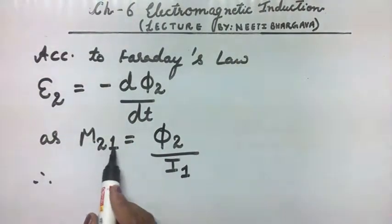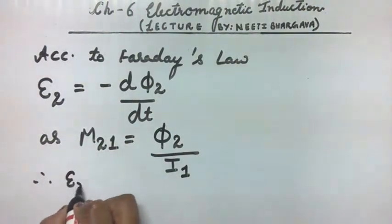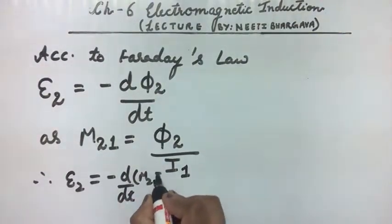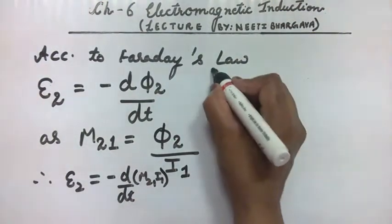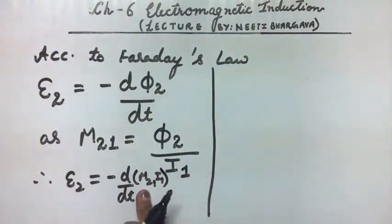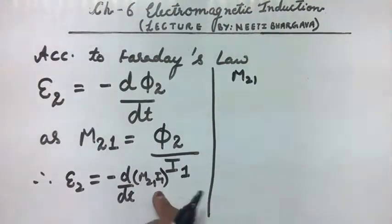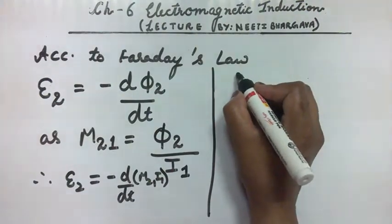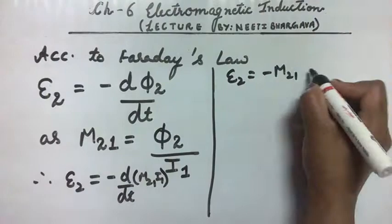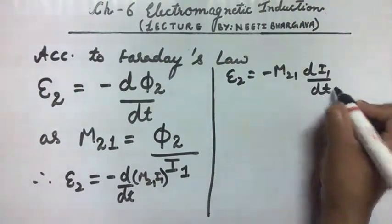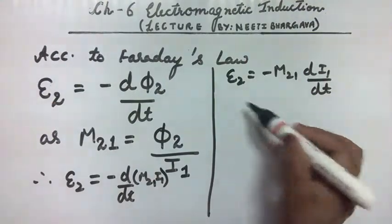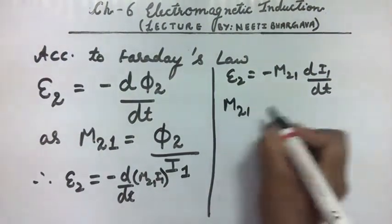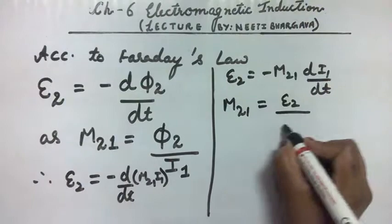Therefore phi₂ can be written as M₂₁ · I₁, and EMF induced equals minus d/dt (M₂₁ · I₁). Since M₂₁ is constant, we get E₂ equals minus M₂₁ · dI₁/dt. By this formula, M₂₁ can also be defined as M₂₁ equals E₂ upon (minus dI₁/dt).